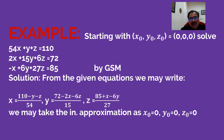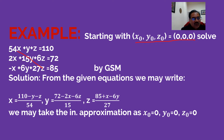Let us look at an example. Starting with x0, y0, z0 = 0, 0, 0, solve the linear system: 54x + y + z = 110; 2x + 15y + 6z = 72; −x + 6y + 27z = 85. Note that the highest coefficient appears on the diagonal — if this is not arranged in the equation, you must rearrange the system so that the coefficient of x is largest in the first equation, y in the second, and z in the third. Only then will the Gauss-Seidel method work effectively.